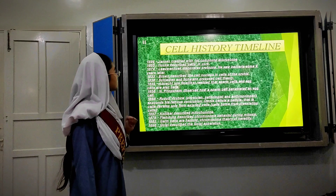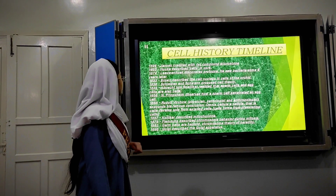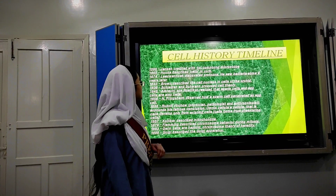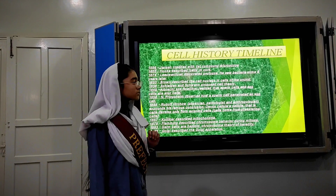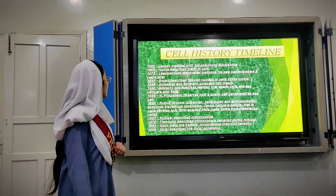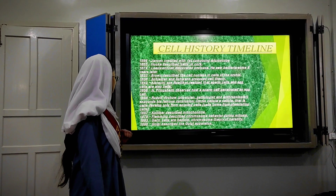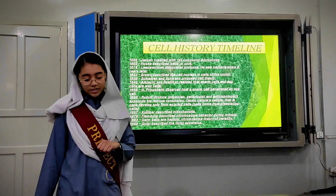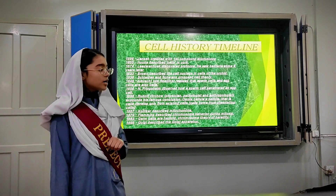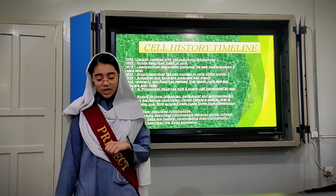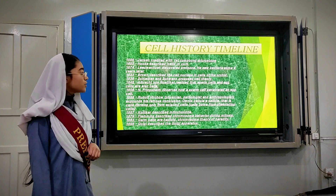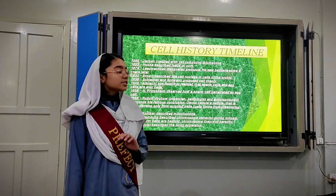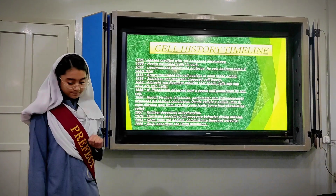Cell history. In 1655, Robert Hooke described cells as cork. In 1838, Schleiden and Schwann proposed the cell theory, which consists of four main postulates.